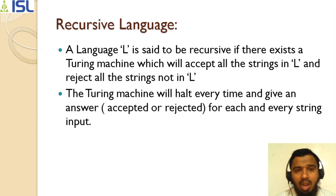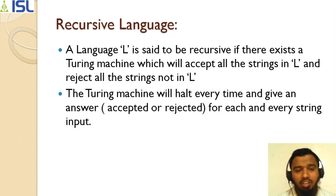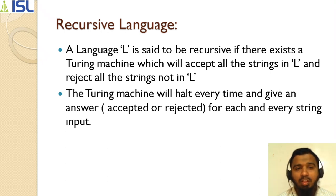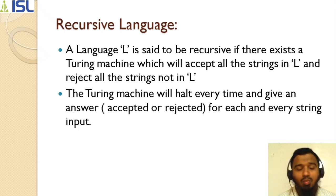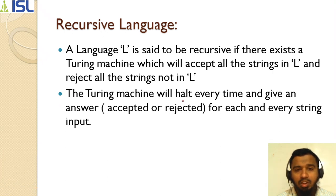Recursive language. A language L is said to be recursive if there exists a Turing machine which will accept all the strings in L and reject all the strings not in L. So in short, the Turing machine accepts all strings which are in L and rejects those which are not in L. The Turing machine will halt every time and give an answer — accept or reject — for each and every input string.